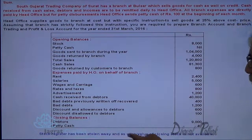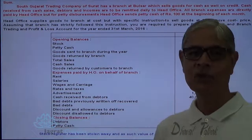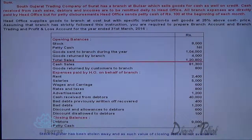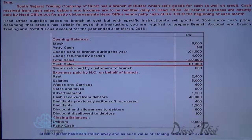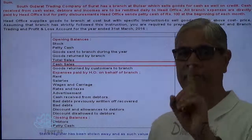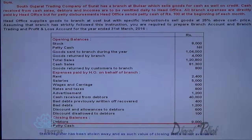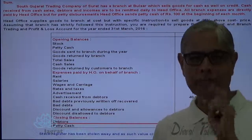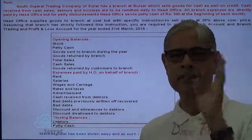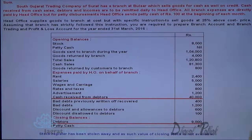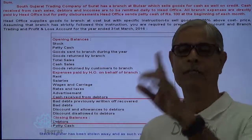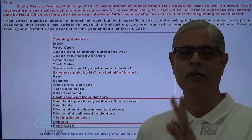The stock register has been stolen and the value of closing stock is not available. Total sales amount to one lakh twenty thousand eight hundred — this is cash sales — on the basis of which we can find out credit sales. We have details of credit sales and closing debtors available. Cash received from debtors is also available. What is missing is the opening balance of debtors — that's an important point.